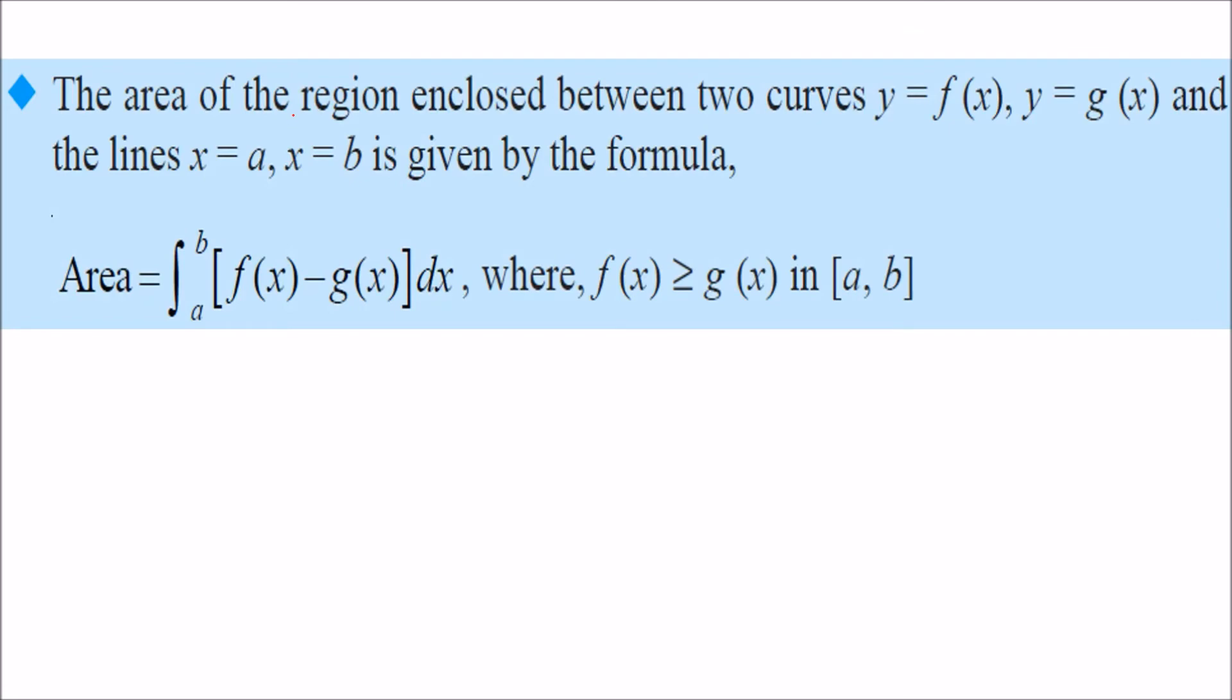The area of the region when we have two curves, one curve is going up, one curve is going down. To find out this area, first we will find out whole area, subtract this area from this second area. f(x) minus g(x) from a to b.